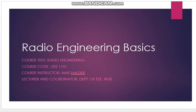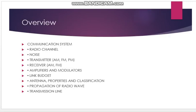Going back to the overview, in this course we will learn about the communication system, namely: radio channel, noise, transmitter, receiver, amplifier, link budget, antenna properties and classification, propagation, and radio transmission. These are the basic components of radio engineering that we will cover day by day.